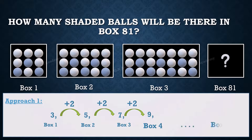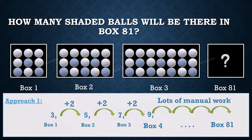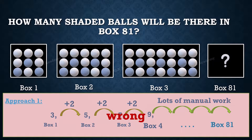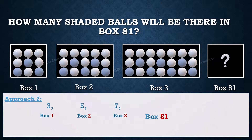Now, if you follow the same approach to get the number of shaded balls in box 81, it requires a huge amount of manual work. So this approach is wrong. To get the number of shaded balls in box 81, we need to first understand the relation between the box number and the number of shaded balls.